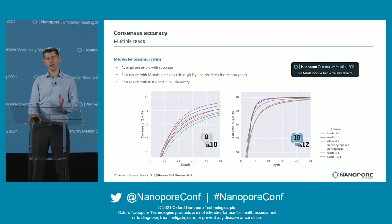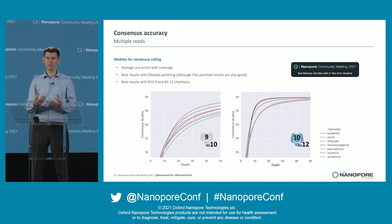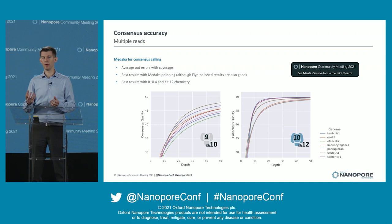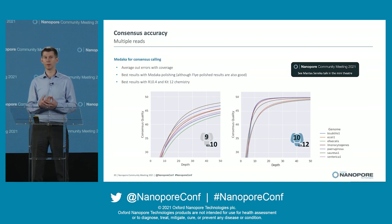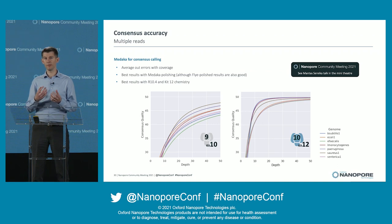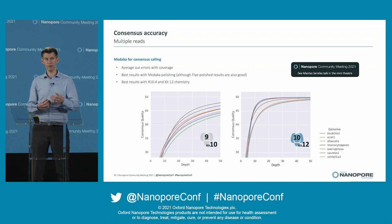With more than two reads you have a consensus. Errors average out with that coverage, and you get the best results with a Nanopore-specific tool. In this case, we recommend our own Medaka tool, which polishes the pile-up and gets you up to Q50 bacterial genomes at modest coverage. Best results are with the R10.4 Nanopore and Kit 12 chemistry, although R9 and Kit 9, 10, and 11 — which Rosemary will talk a bit more about — give pretty respectable results too.